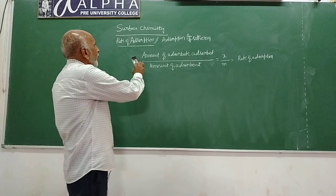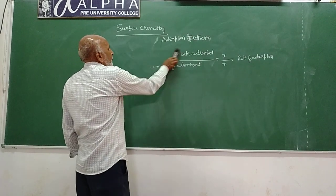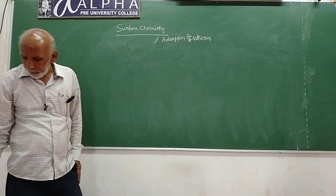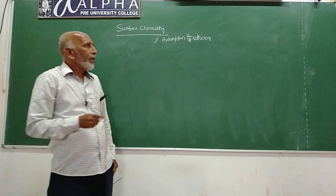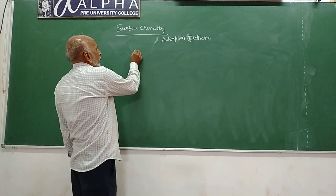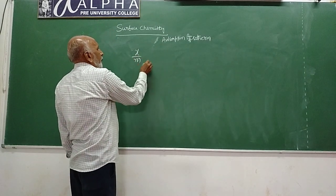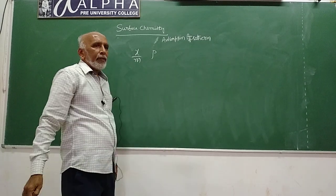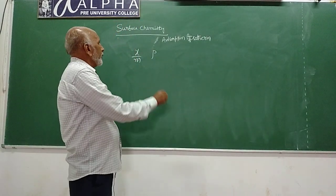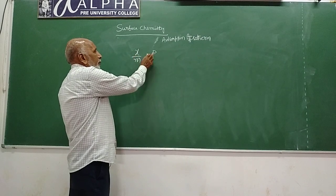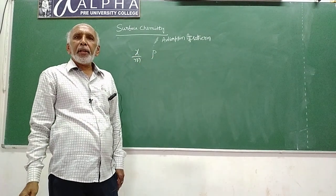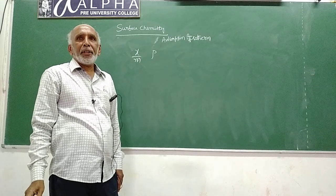Adsorption isotherm is the relationship between rate of adsorption, that is x by m, and equilibrium pressure of adsorption p. The relationship between x by m and pressure at constant temperature is known as adsorption isotherm.